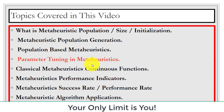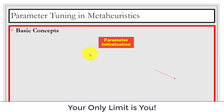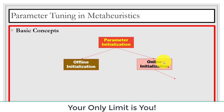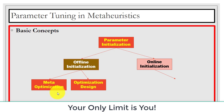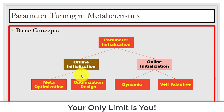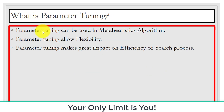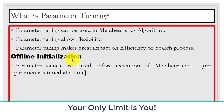Next is parameter tuning in metaheuristic algorithms. We have two types of parameter initialization: offline and online. Offline includes optimization design and meta-optimization; online includes self-adaptive and dynamic approaches. In offline initialization, the value is fixed and unchanged. In online initialization, the value is dynamic and changing. Parameter tuning allows flexibility and makes a great impact on the search process, providing efficiency.